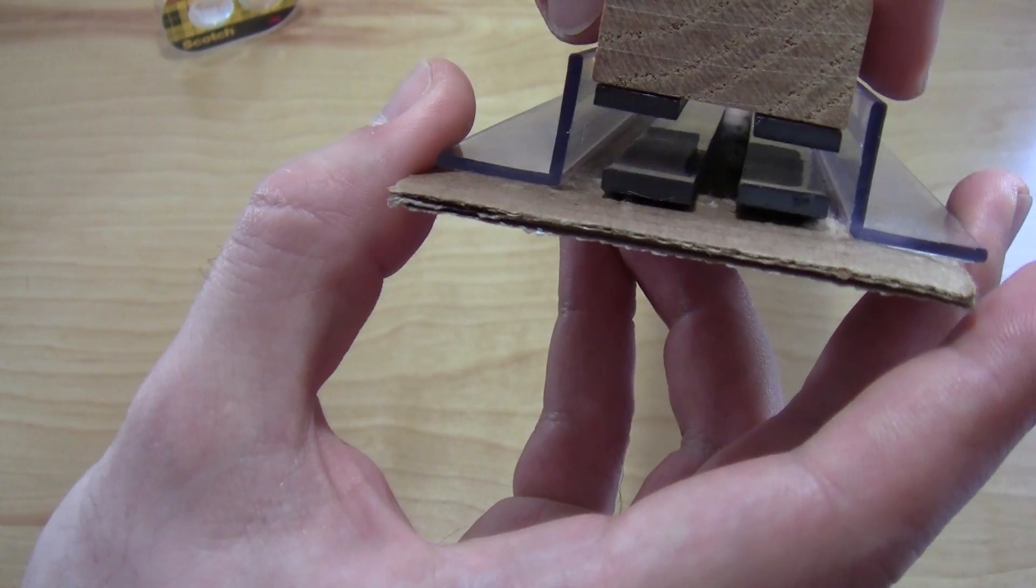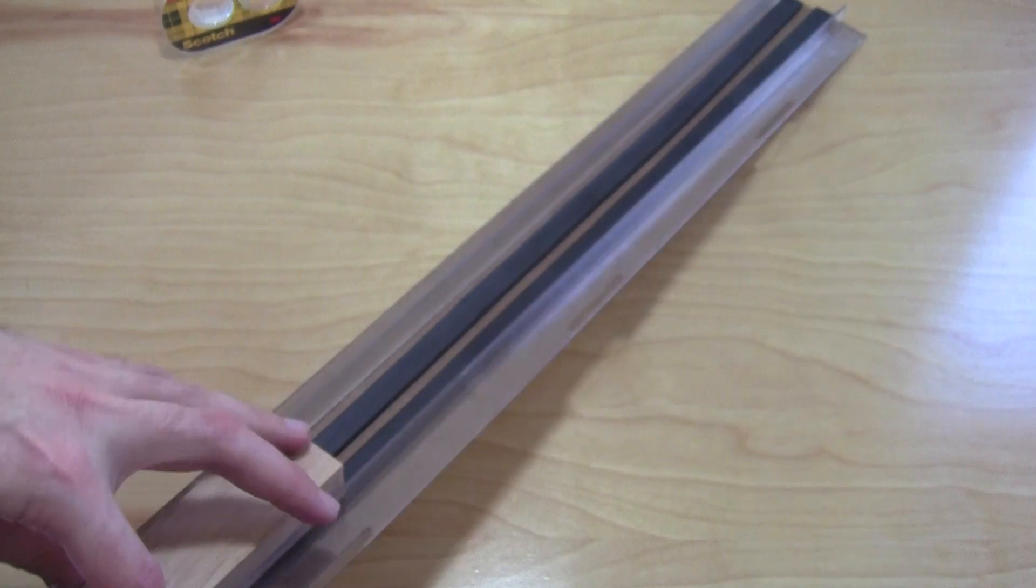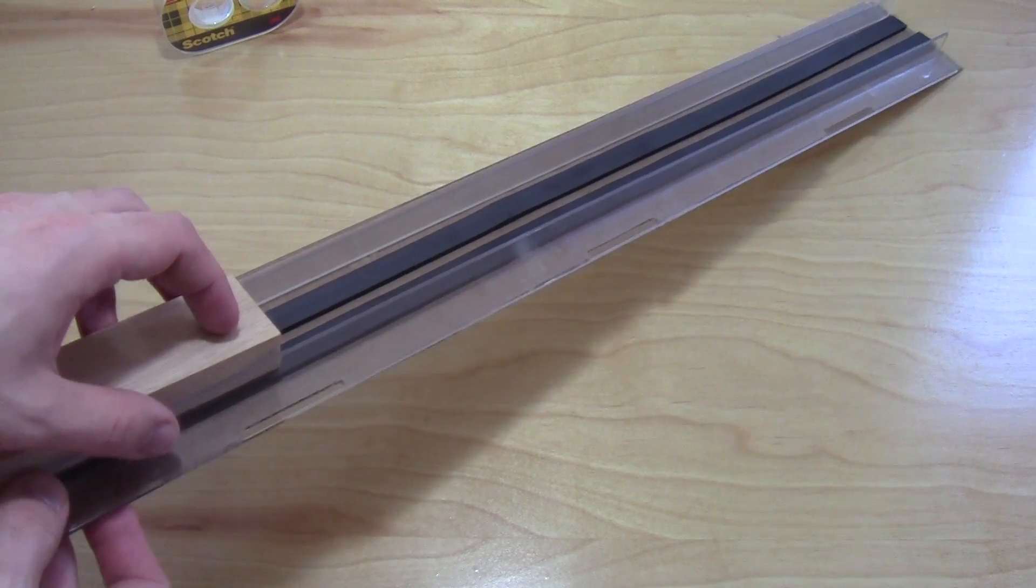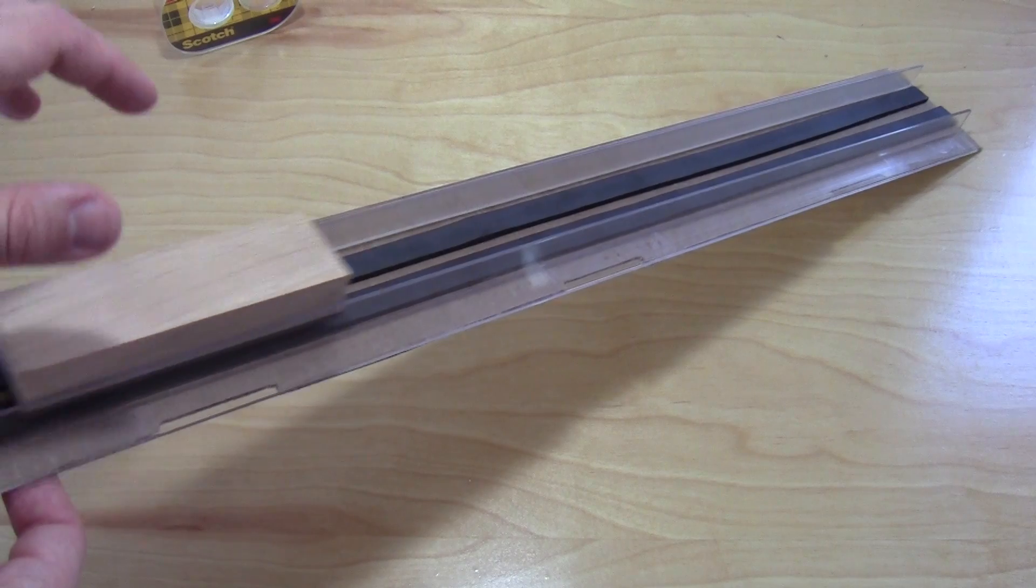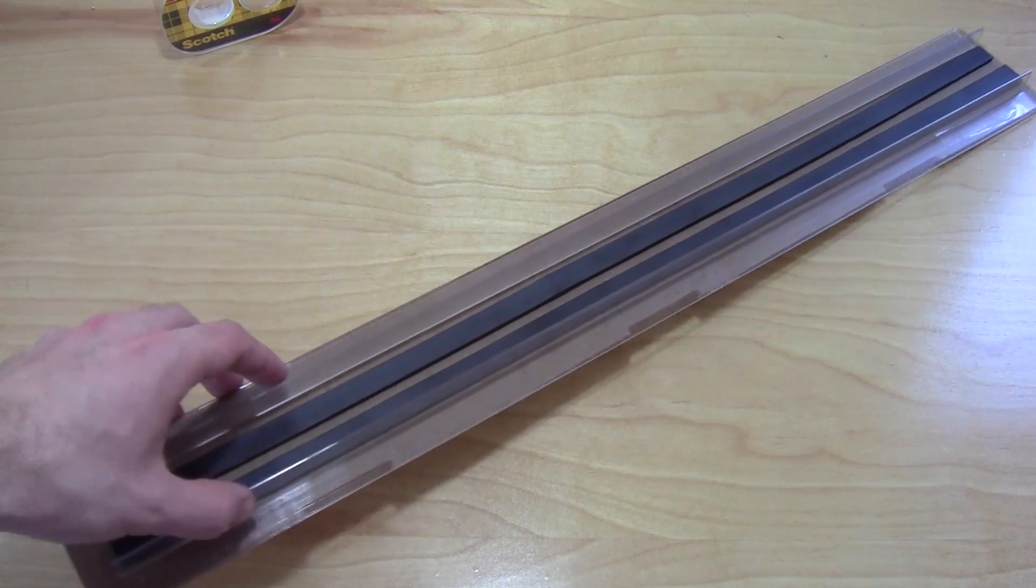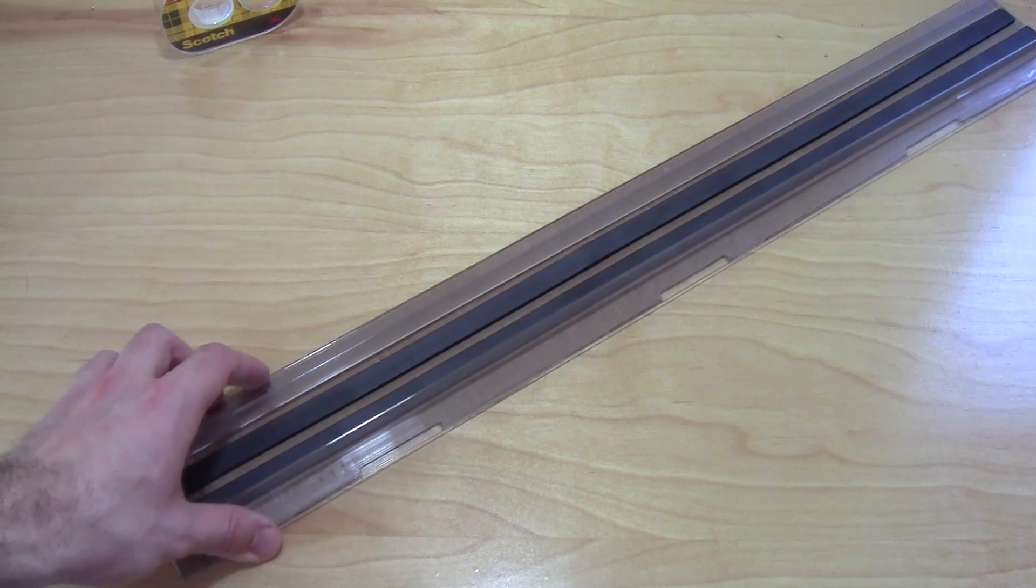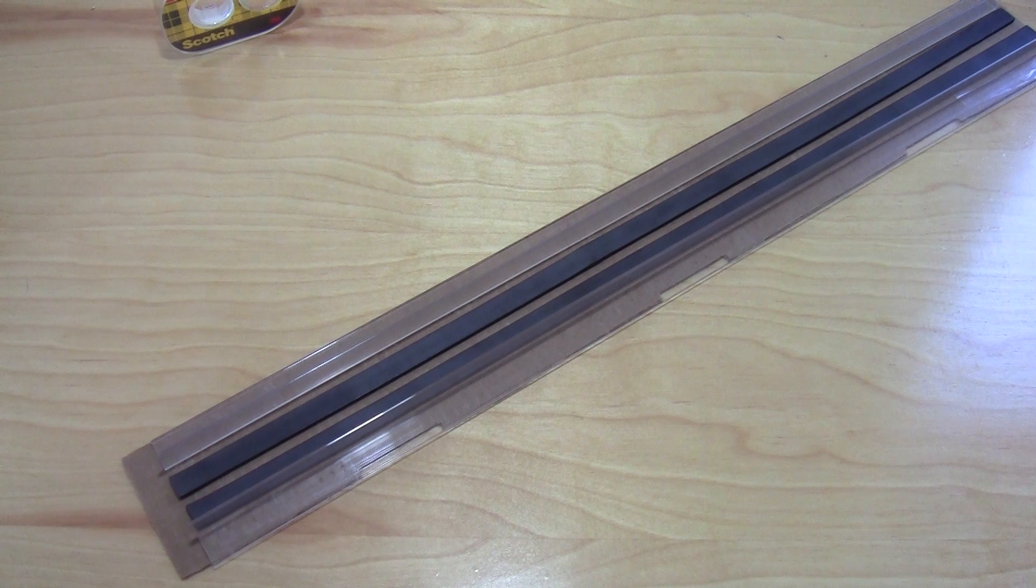So you can tweak all of those things and use fresh tape as necessary as it loses its stickiness. One final test is you can hold your entire track at an angle and the train should glide down easily without getting stuck and then you're ready to move on and do your experiment.